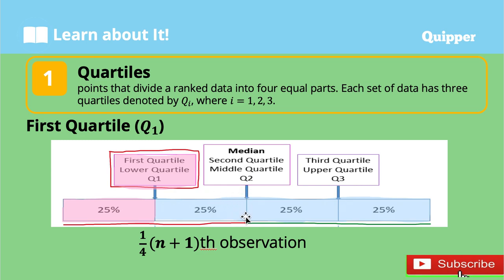So if this is the median, we now have two parts — the left side and the right side of the median. The first quartile represents the middle value of all values to the left of the median. It is also called the lower quartile. If there are n observations in a set of data, the first quartile is the one-fourth of (n + 1) observation when the data are arranged ascendingly.